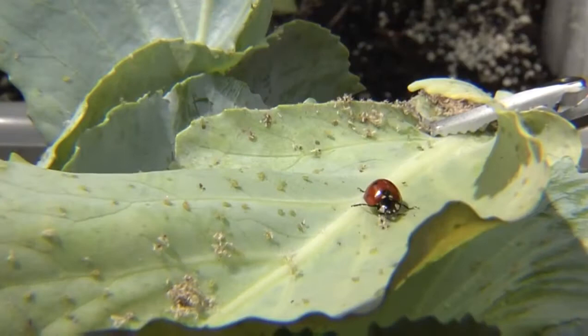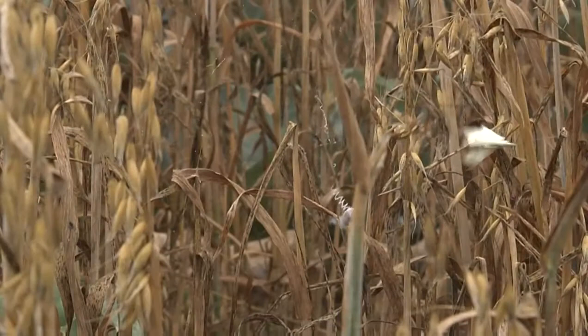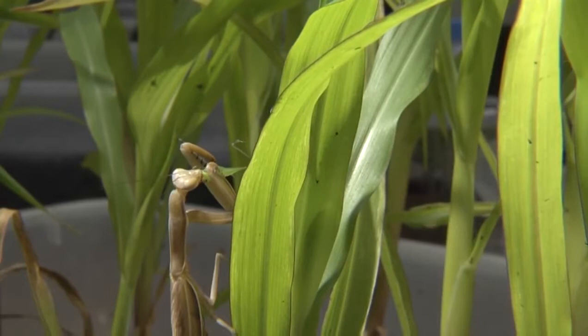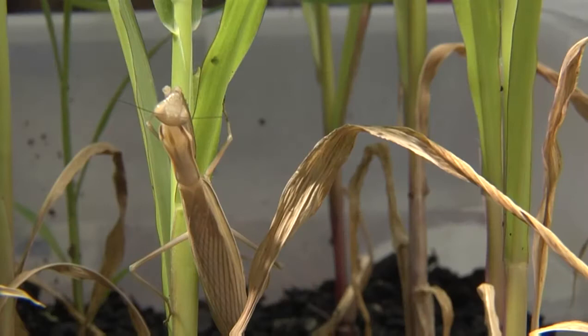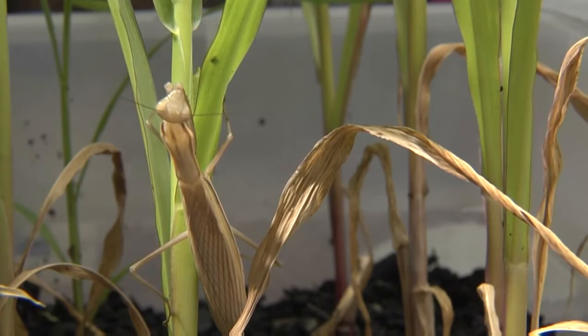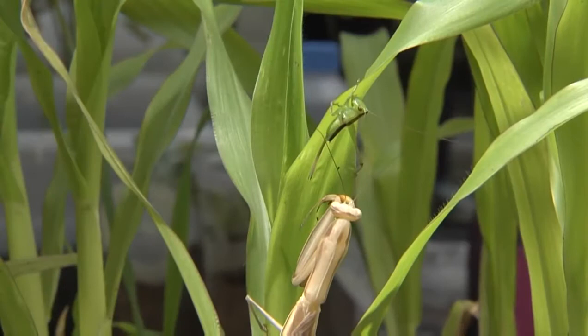Many natural enemies are generalist predators. These arthropods are free-living and attack a diversity of pest species, as either an immature and/or adult. One of the largest and well-recognized generalist predators are the praying mantids. These 3-5 inch insects are in the order Mantodea and family Mantidae. Mantids can be found on plant stems and leaves, where they sit and wait to ambush prey. They have large eyes and can turn their head 180 degrees. When insects come within their reach, they capture them using their front legs, which are modified to grasp and capture prey.